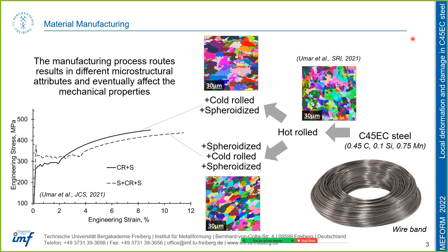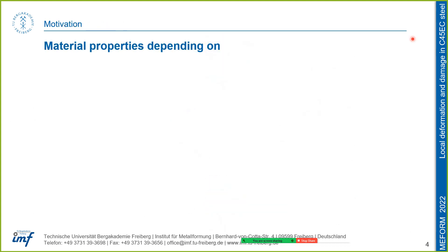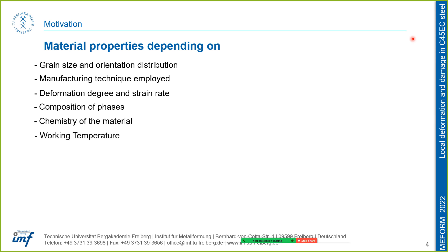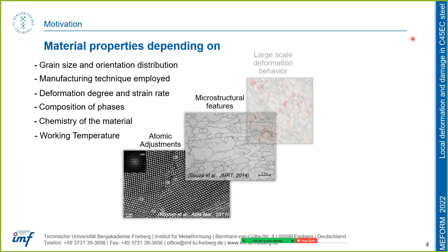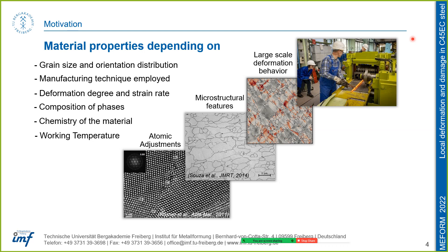We know that the manufacturing process routes result in different microstructural attributes and eventually affect the mechanical properties. The mechanical properties of a material, despite grain size, distribution, and manufacturing technique, are also dependent on deformation degree, strain rate, phase composition, material chemistry, and working temperatures. All these attributes affect the atomic adjustments in the material, which in turn affect microstructural features and result in different large-scale deformation behaviors.